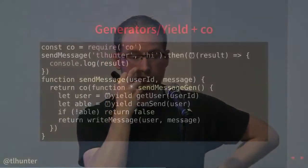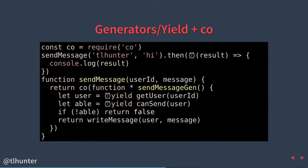Luckily there's a nicer way to represent this. Since the pattern is simple — take a variable out, wait for the promise to give us the value, then put it back in — that could be automated. We can use a library called 'co', which I believe stands for coroutine. You wrap a generator function in this co call, and that co call returns a promise. Everything within that generator — co basically keeps getting these promises and putting them back into the generator. If it ever gets a rejected promise, it returns a promise that rejects. It makes working with generators and promises much easier. The calling code for sendMessage is the exact same promise code we showed earlier.